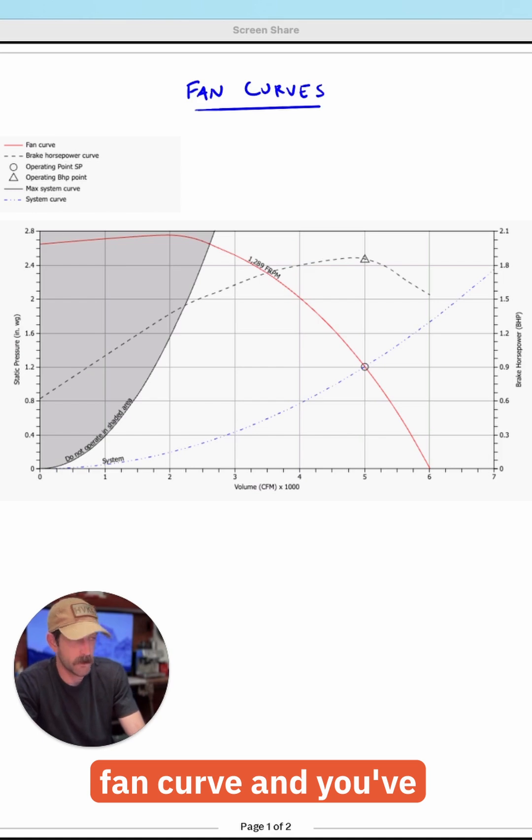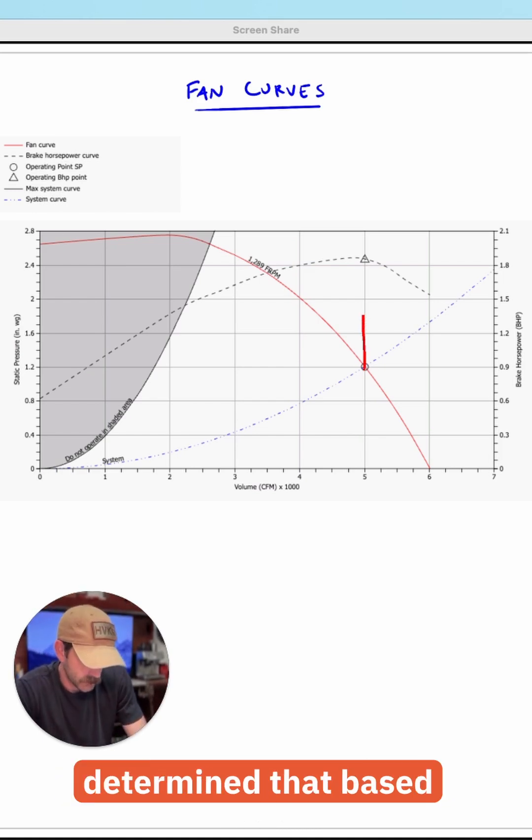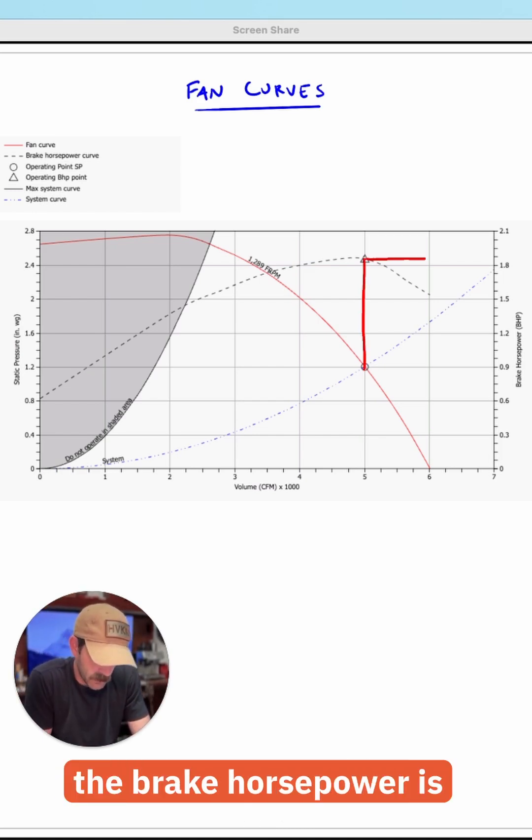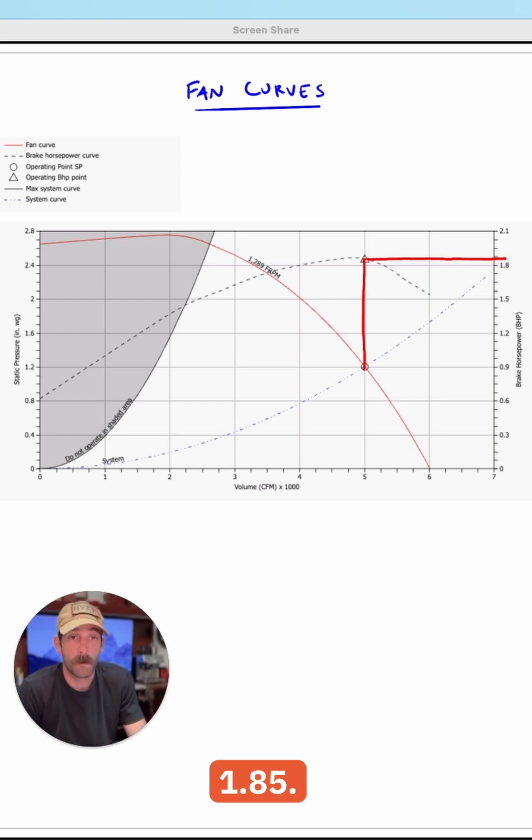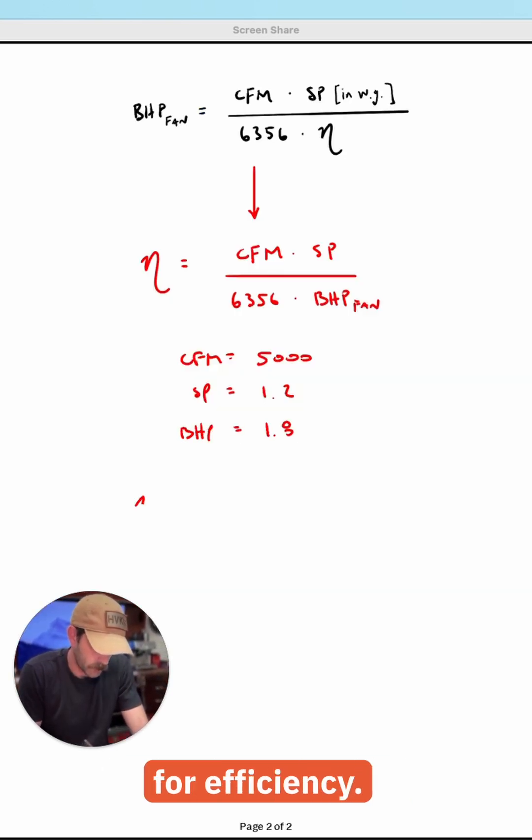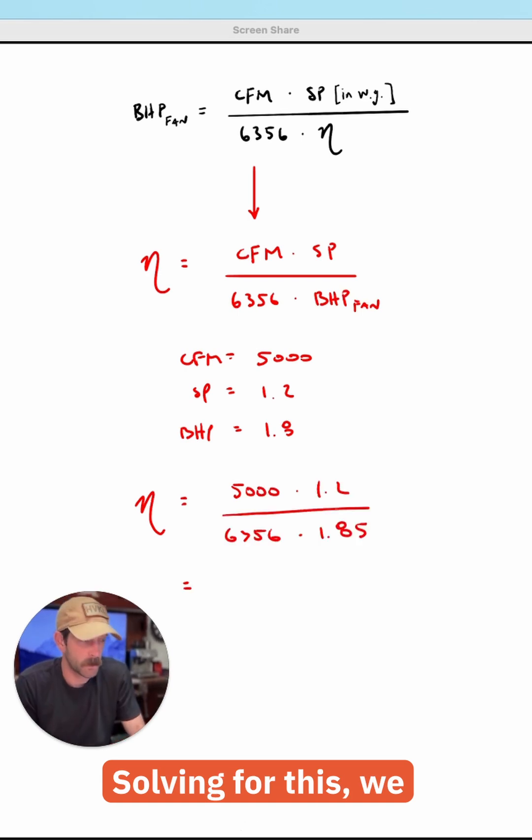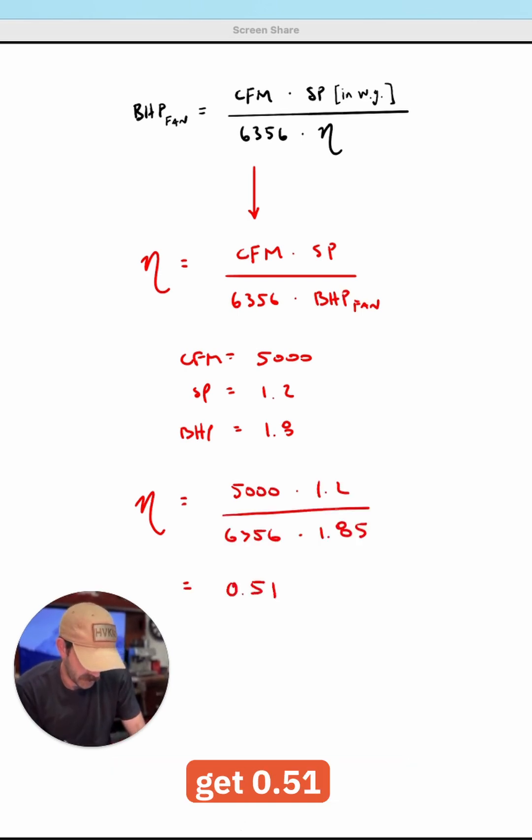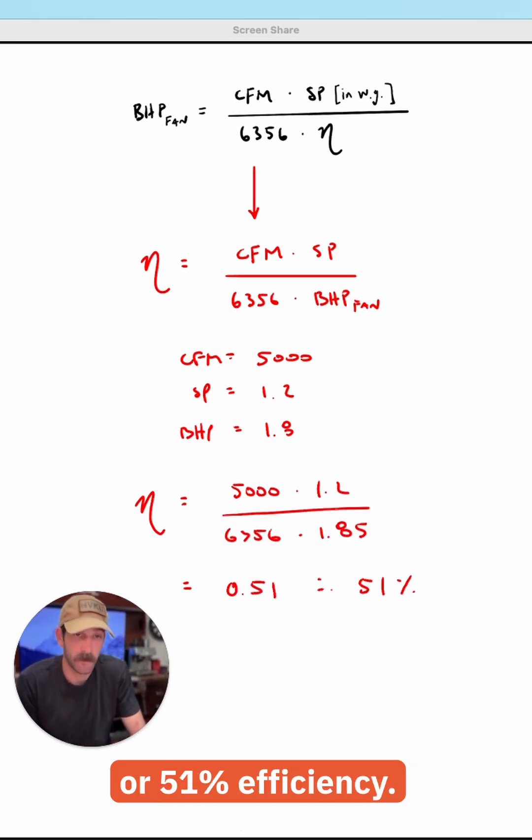And maybe you have a fan curve and you've already done a selection. And so you've determined that based on this fan, the brake horsepower is going to be about 1.85. So given brake horsepower, we're able to solve for efficiency. Let's crunch these. Solving for this, we get 0.51 or 51% efficiency.